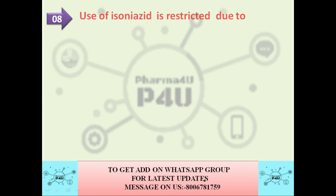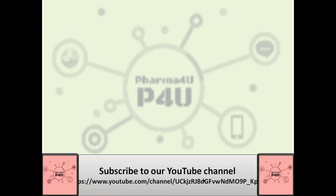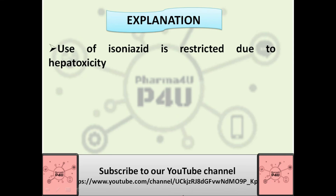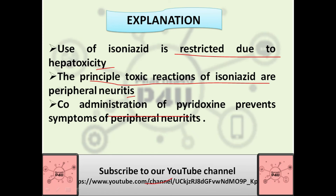The next question is: the use of isoniazid is restricted due to — option A is ototoxicity, option B is hepatotoxicity, option C is neurotoxicity, option D is bone marrow depression. The correct answer is hepatotoxicity. The use of isoniazid is restricted due to hepatotoxicity. The principal toxic reaction of isoniazid is peripheral neuritis, and co-administration of pyridoxine prevents symptoms of peripheral neuritis.